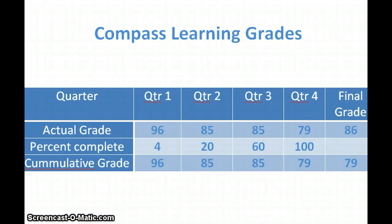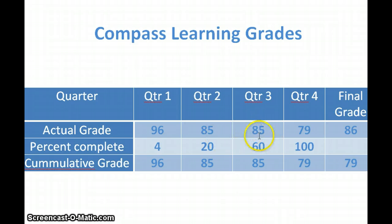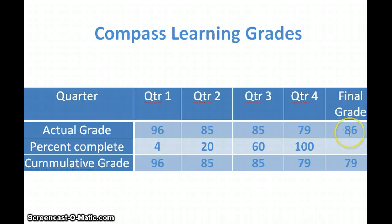What I'm showing you on this screen is that if at the end of quarter one we just looked at whatever the student had done and put their grade in — say this student had only finished 4% of the course and got a good grade, maybe because the beginning of the course is very easy. Then we figured the grade at the end of quarter two just for the work done in quarter two, quarter three just for the work completed in quarter three, and quarter four only for the work completed in quarter four. If we average these four together, the student is going to get an 86.